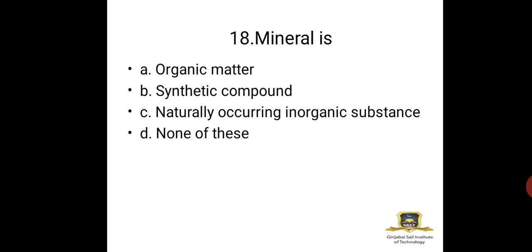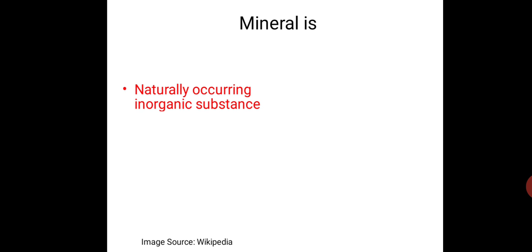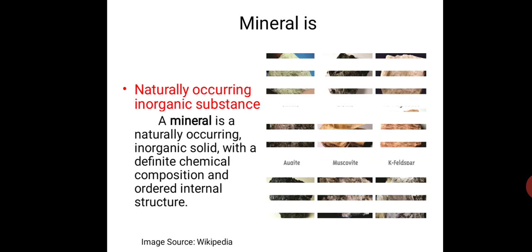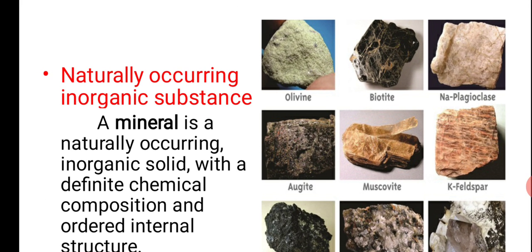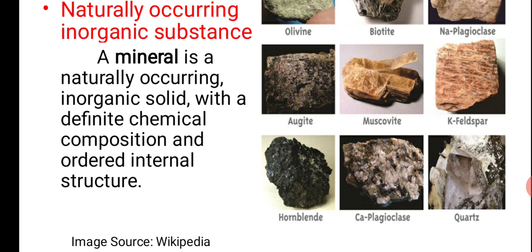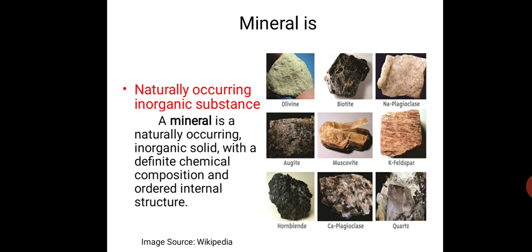Question 18: A mineral is — an organic matter, synthetic compound, naturally occurring organic substance, or naturally occurring inorganic substance? The answer is naturally occurring inorganic substance. A mineral is a naturally occurring inorganic solid with a definite chemical composition and ordered internal structure. Note: organic means containing carbon; inorganic means not containing carbon. Many minerals exist as naturally occurring inorganic solids.